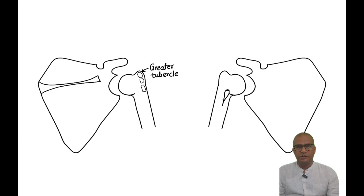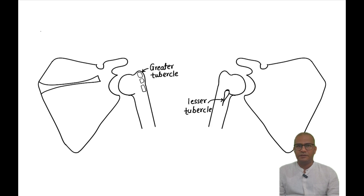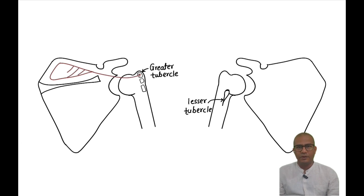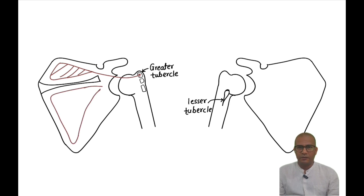In the posterior view, we will draw the supraspinatus muscle in the supraspinous fossa and show its insertion on the upper impression of the greater tubercle of the humerus. Next, we will draw the infraspinatus muscle in the infraspinous fossa and show its insertion on the middle impression of the greater tubercle.